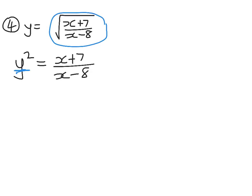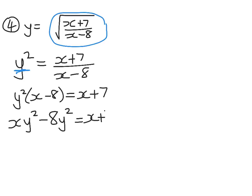So multiplying both sides through by x minus 8, we get y squared times x minus 8 equals x plus 7, and now I'm going to expand: x y squared minus 8 y squared equals x plus 7. And my goal is to isolate everything with x's on one side and everything without x's on the other side. So we have x y squared minus x equals 7 plus 8 y squared.